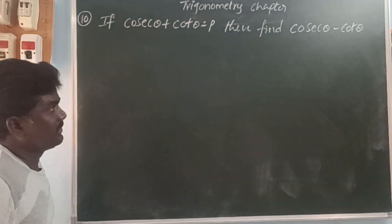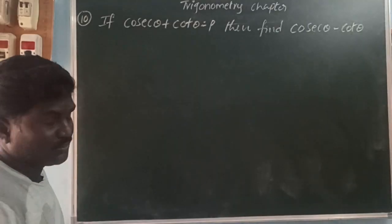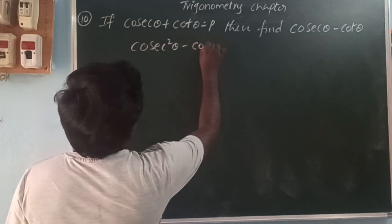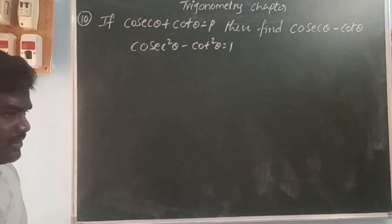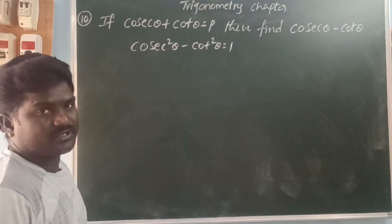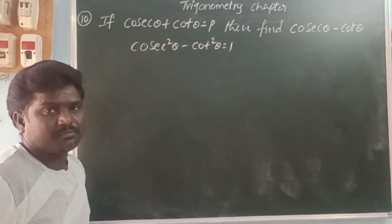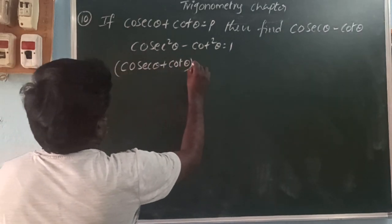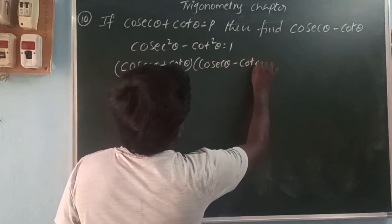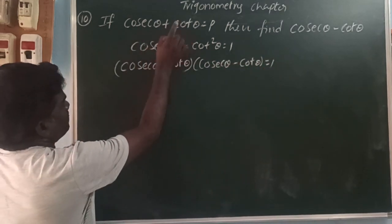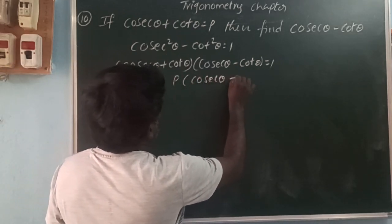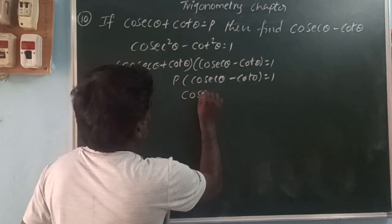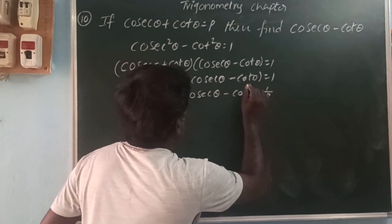Next: if cosec θ plus cot θ equals p, find cosec θ minus cot θ. Using the trigonometric identity, cosec squared θ minus cot squared θ equals 1. The left side is in the form a squared minus b squared, which equals (a plus b)(a minus b). So cosec θ plus cot θ into cosec θ minus cot θ equals 1. Since cosec θ plus cot θ equals p, therefore cosec θ minus cot θ equals 1 by p.